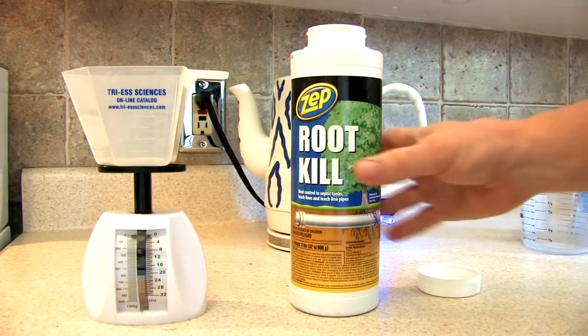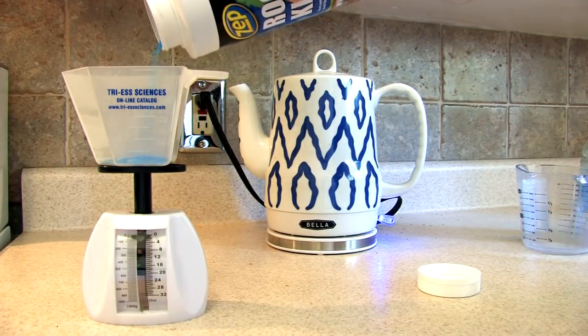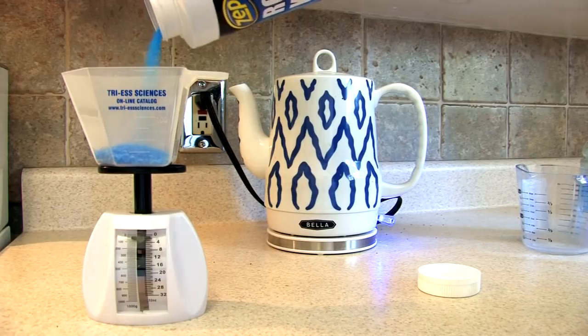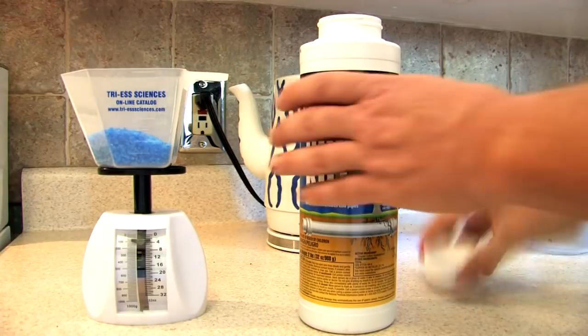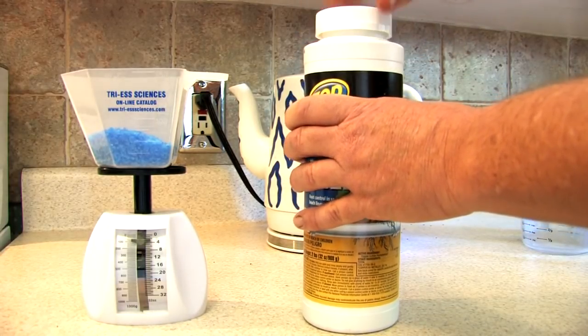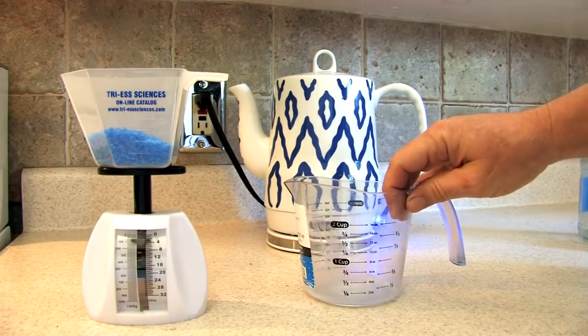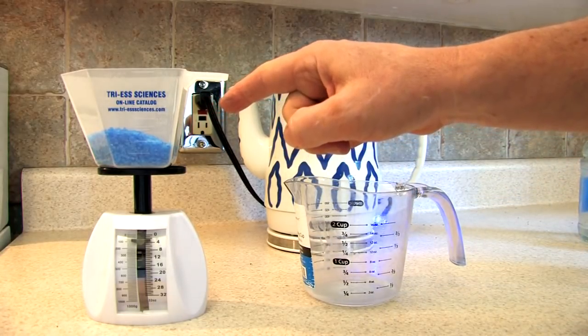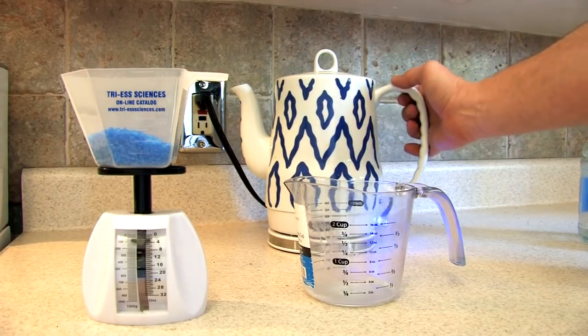So we've got our scale here and I'm going to measure an ounce and a half of our copper sulfate crystals, copper sulfate pentahydrate to be specific. Super simple to do and our water is heating up to boiling behind there.